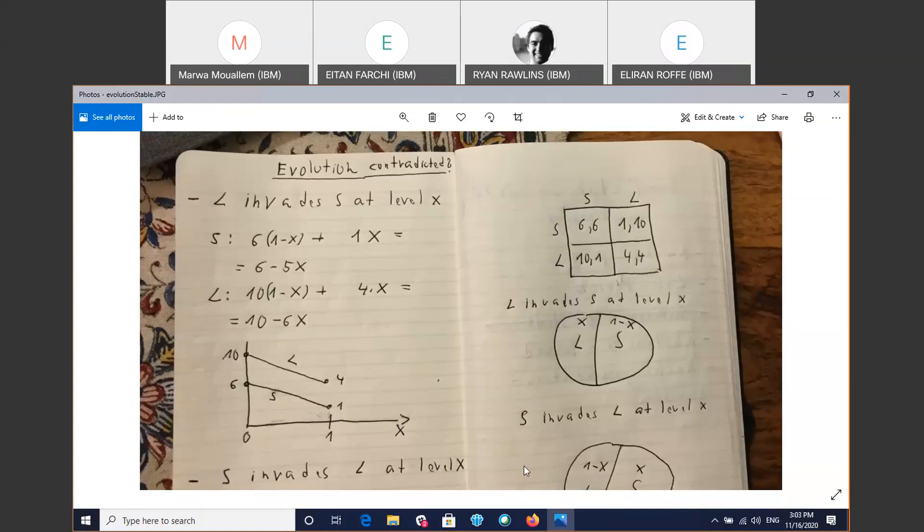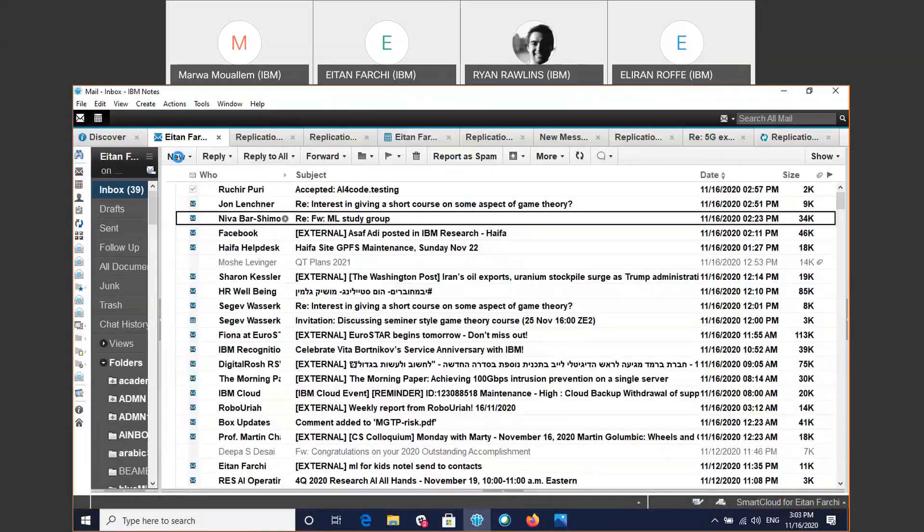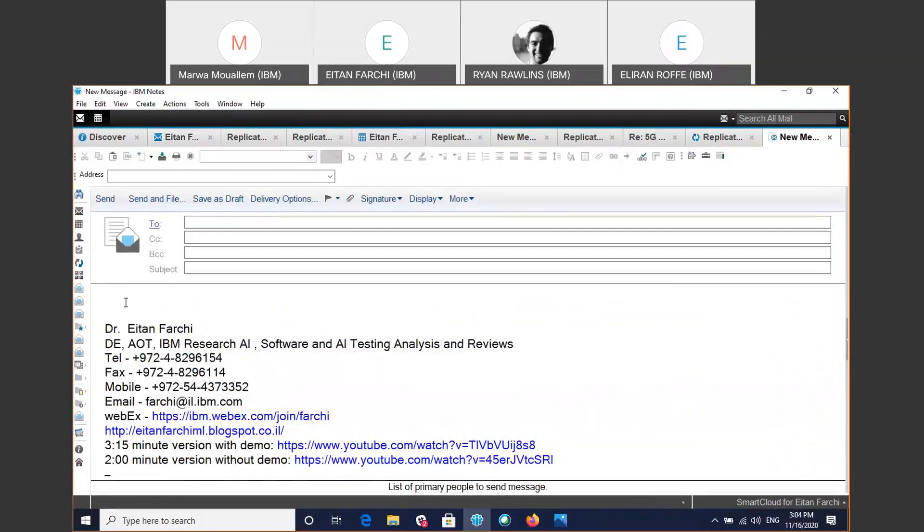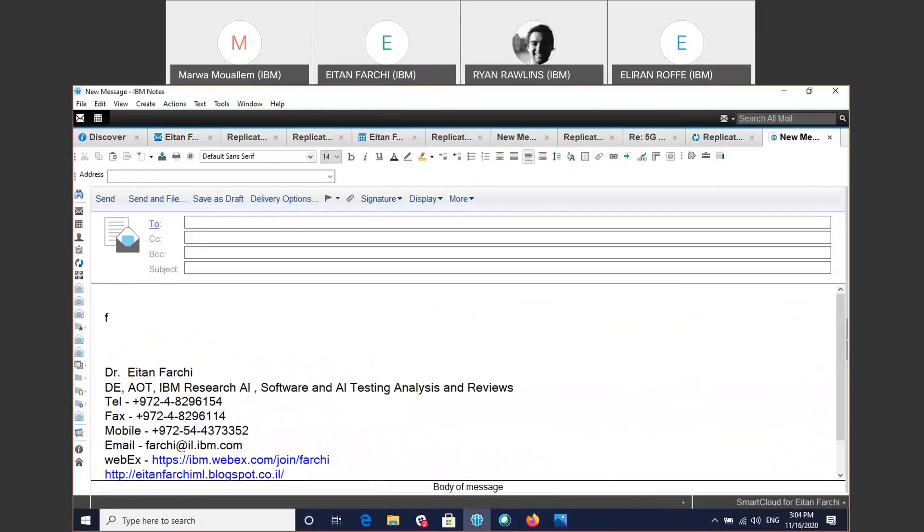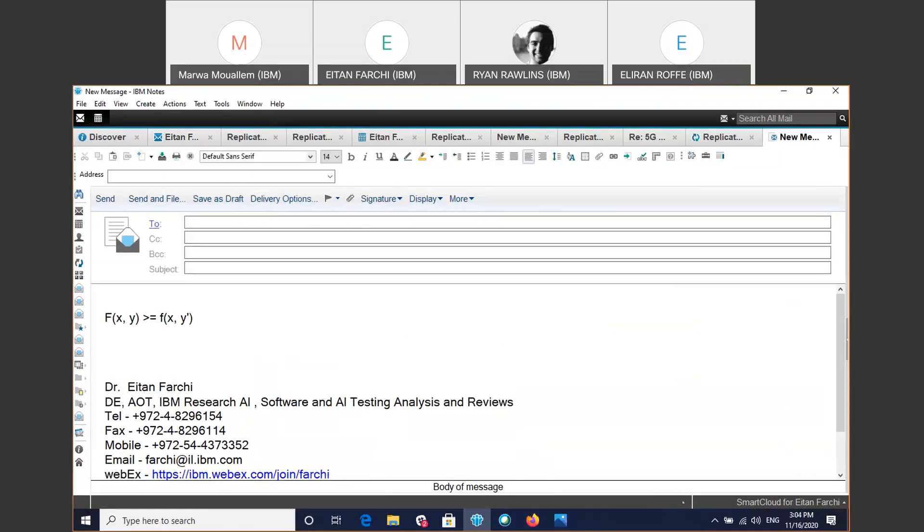Maybe I'll remind us what a Nash equilibrium is. So if this is the payment, and X and Y are actions, so a Nash equilibrium is such that if player number 2 changes its action to Y prime, then it loses. Or if player number 1 changes its action to some X prime, it loses. Okay? So that's the definition of a Nash equilibrium.